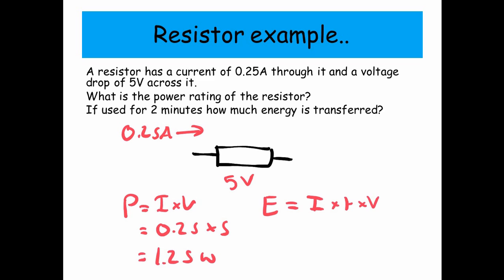And as for the energy, energy equals ITV. But this time, remember, it's for two minutes. So we need to convert that two minutes into seconds by timesing by 60. So we've got 0.25 times 120 times by 5 gives us 150 joules of energy.